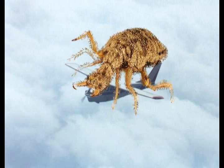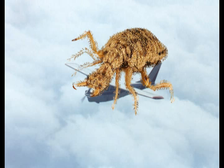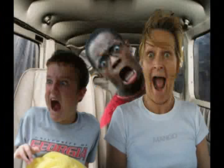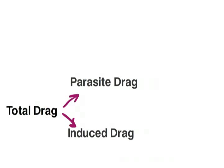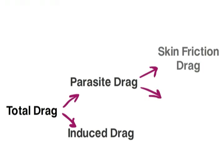Parasite drag is not caused by a giant parasitic creature hitching a ride on your aircraft, although that would probably make your flight a lot more interesting. Parasite drag is actually mainly made of skin friction drag and form drag. Let's look at skin friction drag first. An aircraft moving through the air is having to move through trillions of air particles.